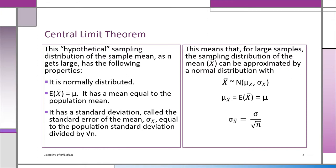What about the standard deviation? We call it the standard deviation of the x-bars, shown as sigma sub x-bar. The standard error of the mean, sigma x-bar, is equal to the population standard deviation divided by the square root of n. So for large samples, the sampling distribution of the mean can be approximated with a normal distribution. The expected value of x-bar is mu, and the standard error of the mean is sigma over the square root of n.